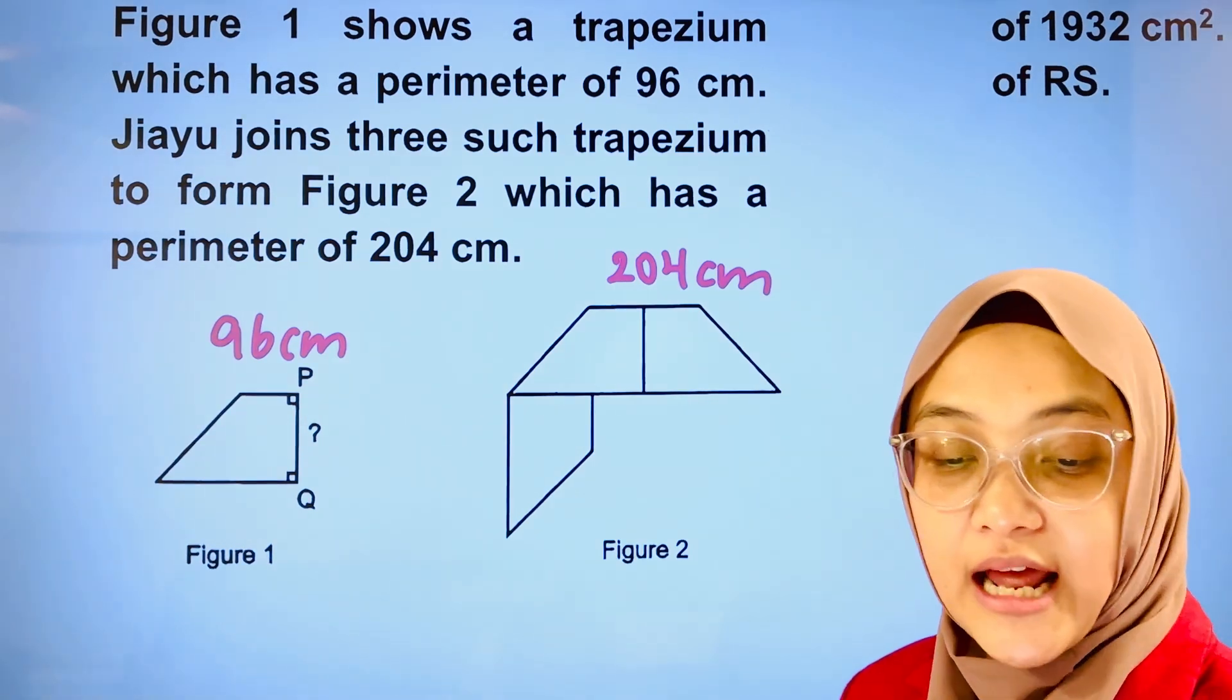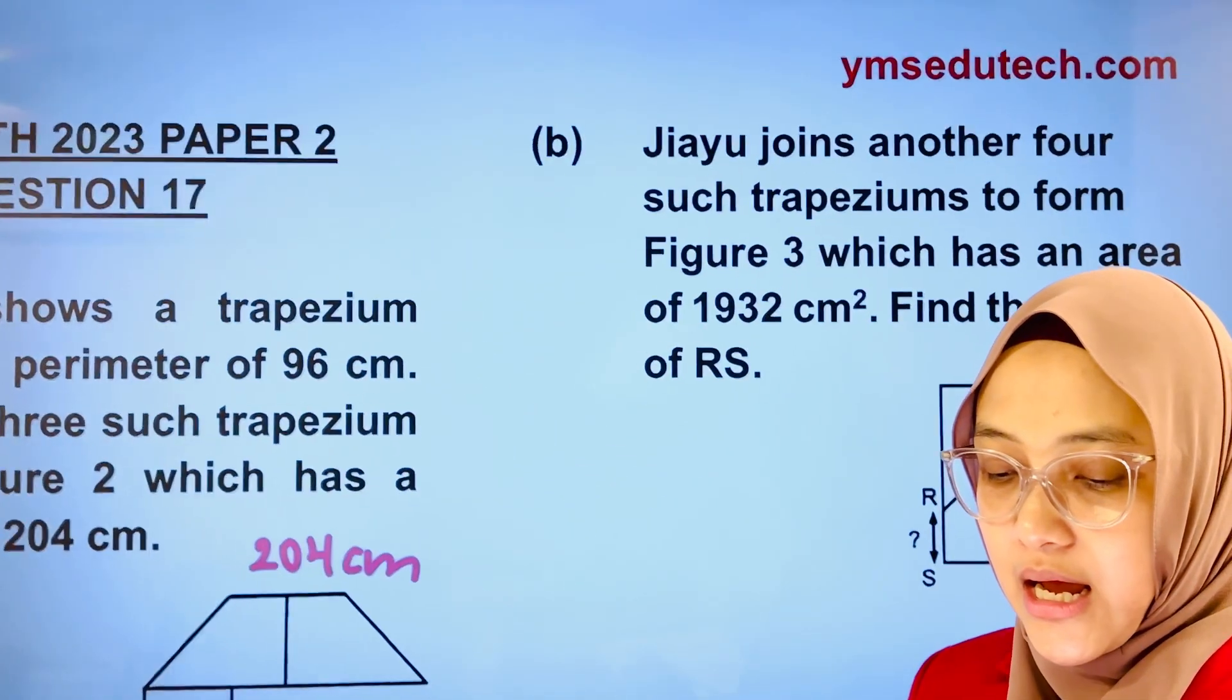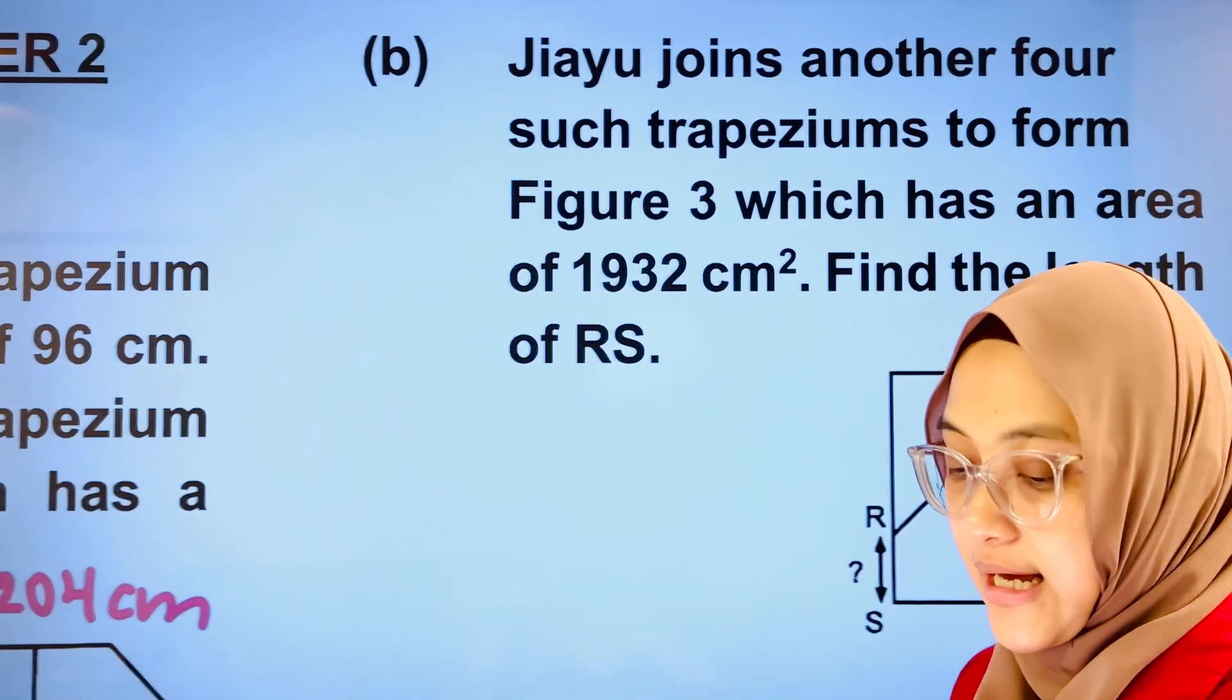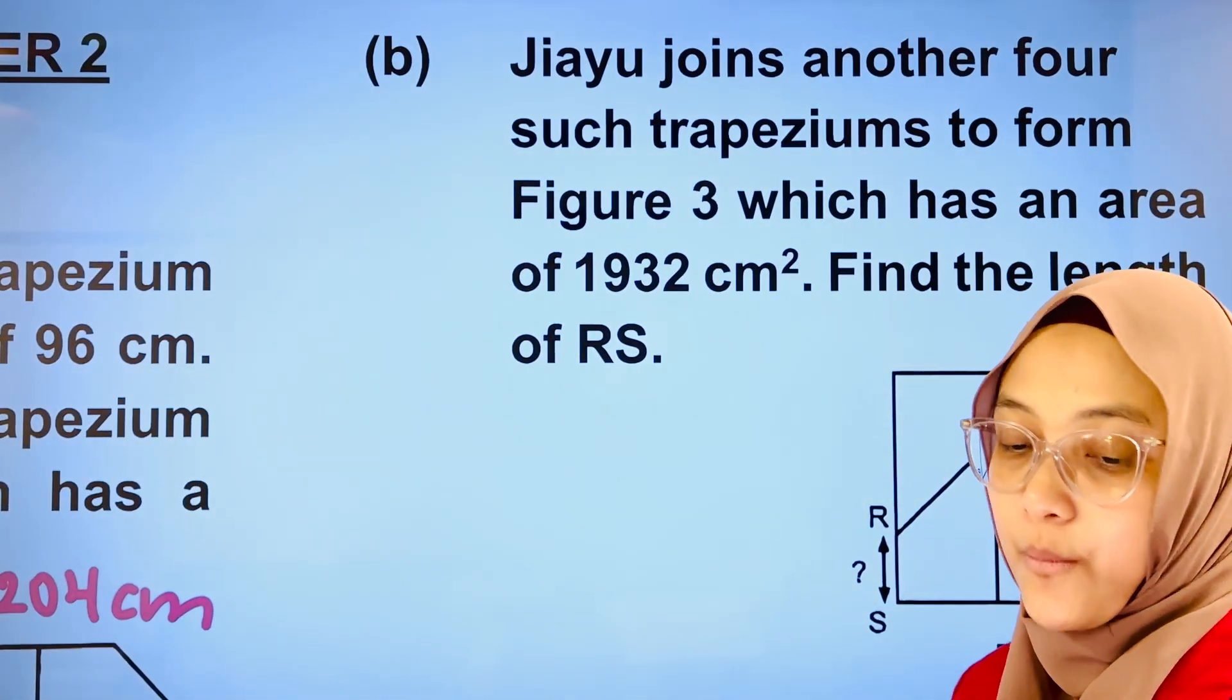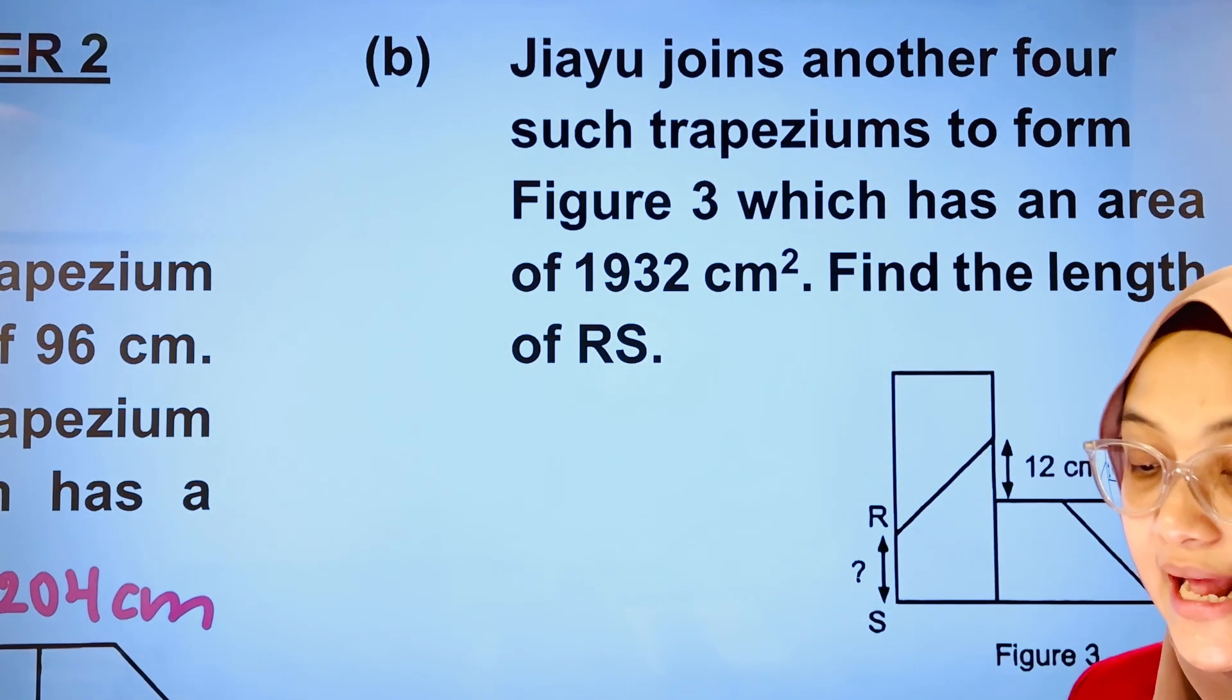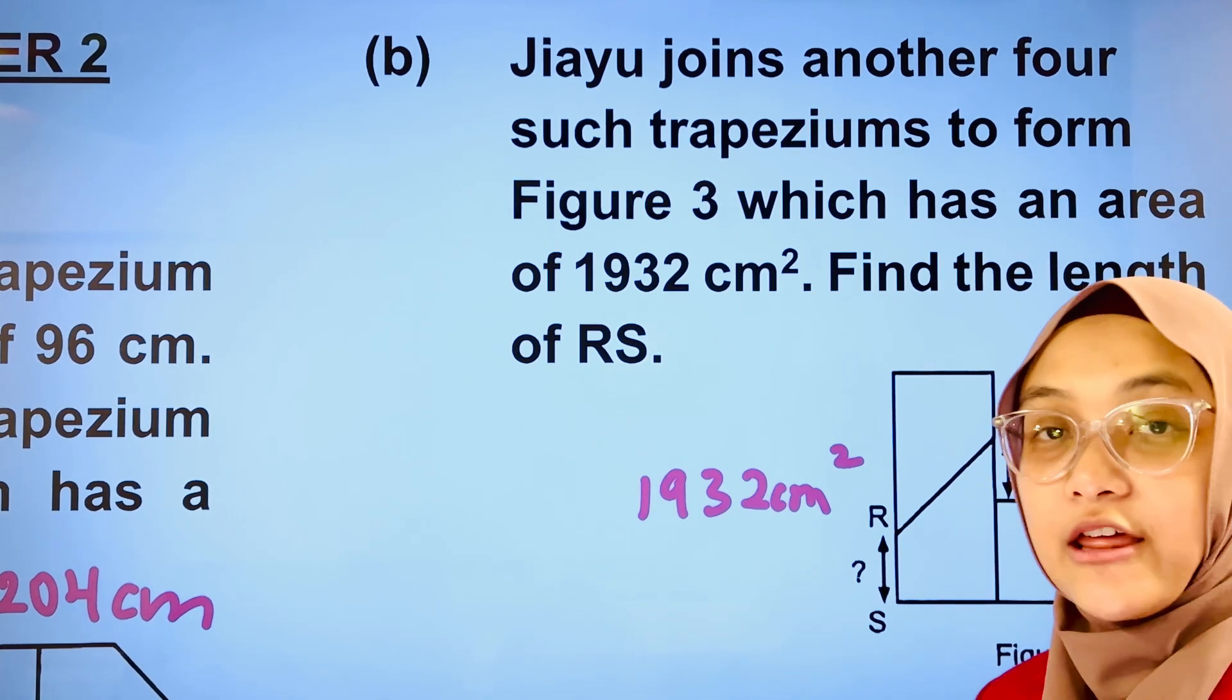Question A: Find the length of PQ. Part B: Jiayu joins another four such trapeziums to form figure 3 which has an area of 1932 cm². Find the length of RS.